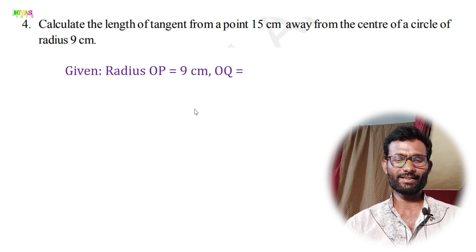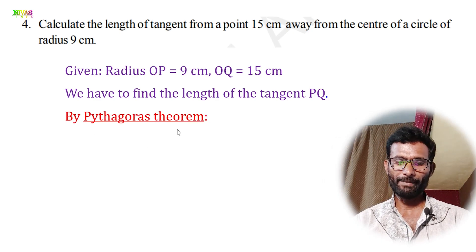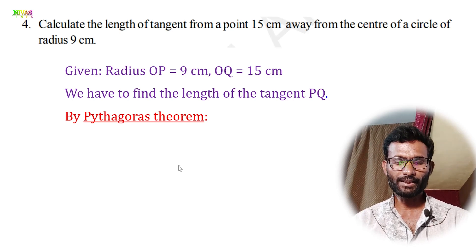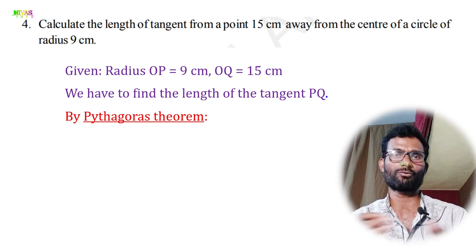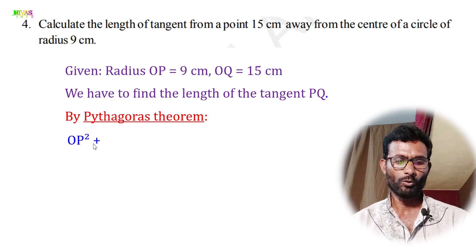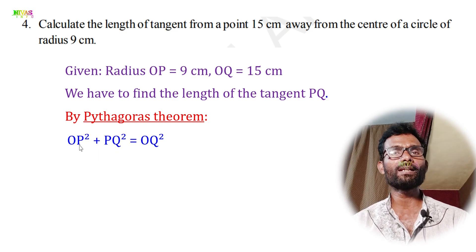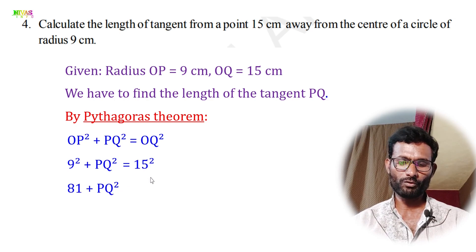Given: OP = 9 centimeters and OQ = 15 centimeters. By Pythagoras theorem: OP² + PQ² = OQ². So 9² + PQ² = 15², which gives 81 + PQ² = 225. Transposing: PQ² = 225 − 81 = 144.